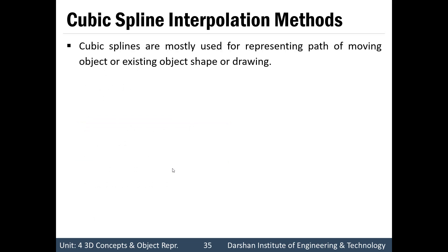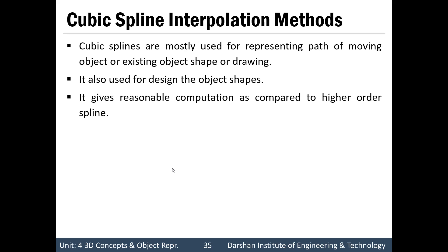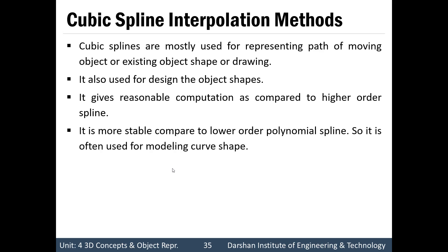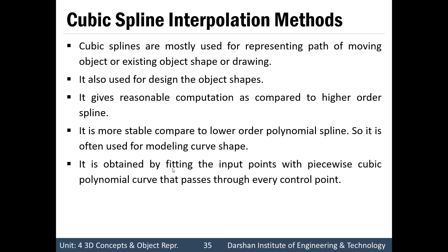Cubic splines are mostly used for representing a path of a moving object, an existing object shape, or for drawing purposes. They are also used for designing object shapes. They give reasonable computation compared to higher-order splines, which require solving higher-order equations with more computation power. At the same time, cubic splines are more stable than lower-order polynomial splines, making them a trade-off between computation power and output quality.